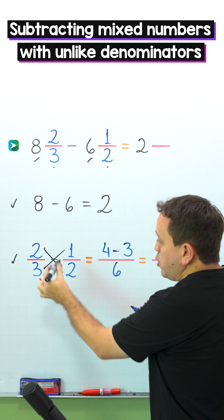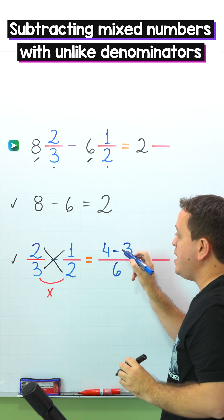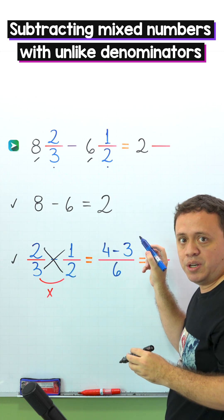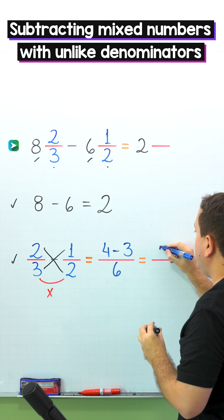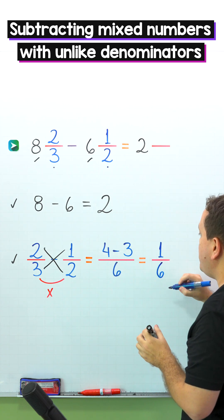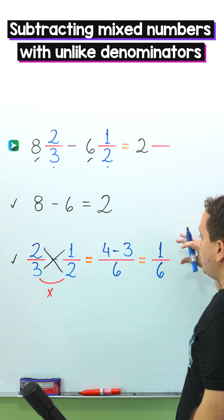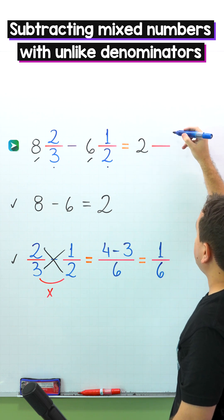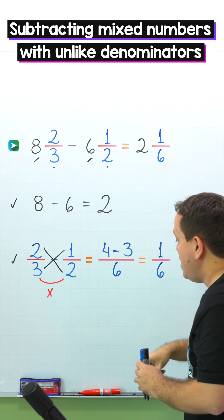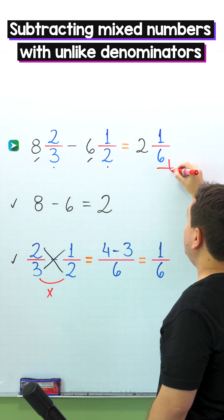Never change the order. We start with 2 times 2 — that's 4 — then the minus sign, and continue with 3 times 1, which is 3. Pay attention: 4 minus 3 is 1, and the denominator stays the same — 6. The difference of the fractions is 1 sixth. Finally, we add the difference of the fractions to the difference of the whole numbers, so we put 1 sixth next to the number 2. Therefore, 8 and 2 thirds minus 6 and 1 half gives us 2 and 1 sixth.